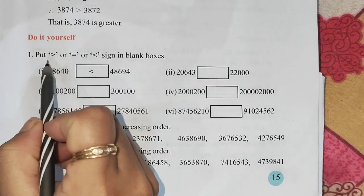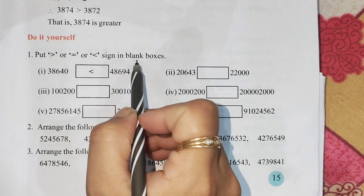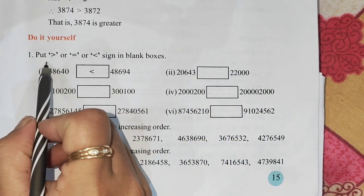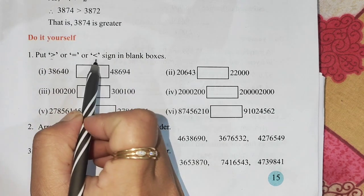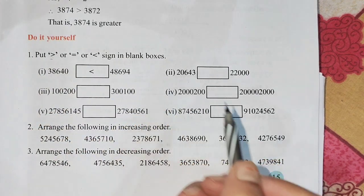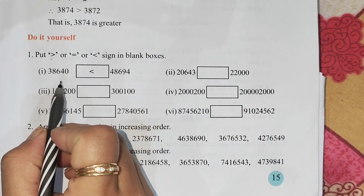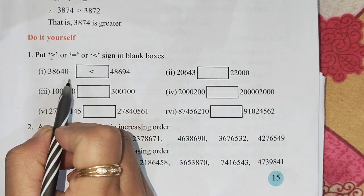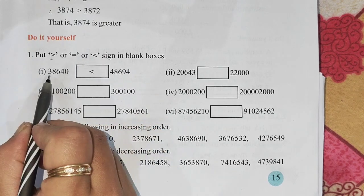We are going to put less than, equal to, or greater than sign in a blank box. We are going to get rid of these pictures and bring the people. We are going to put less than, equal to, or greater than sign in the blank box.